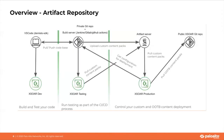Here we can see an example of how XOR content might be promoted across different environments. A content developer might choose to work locally on their own machine, leveraging the IDE of their choice, and pulling in content from the dev instance into a local machine using the Demisto SDK. Using a version control system such as Git allows for a lot of flexibility in the deployment process.